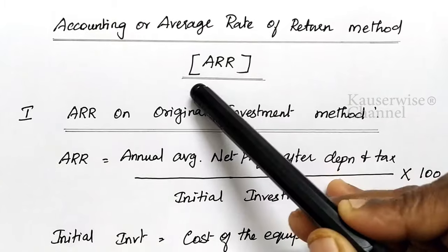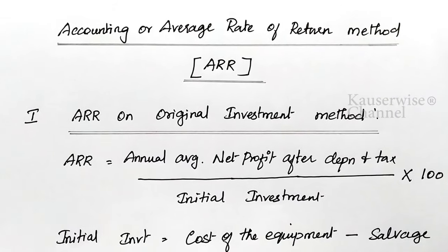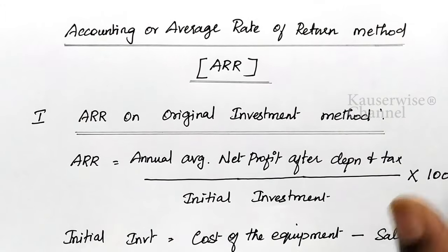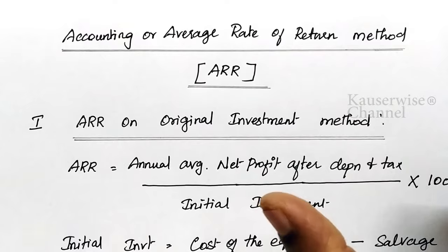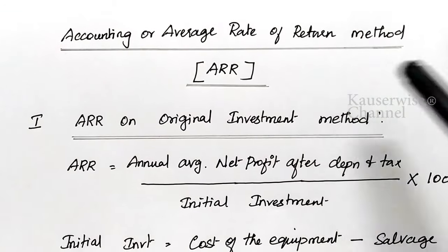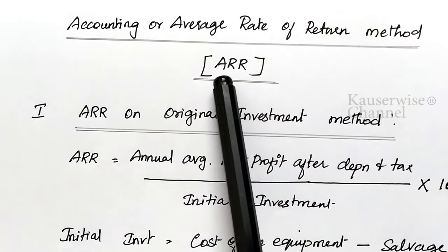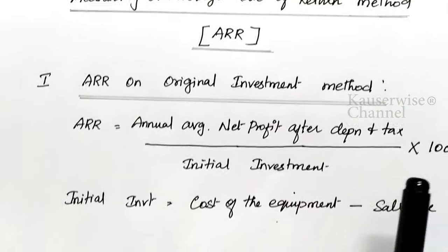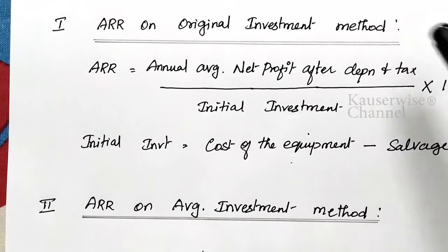ARR stands for Accounting or Average Rate of Return method. It is a tool which measures the rate of return on capital employed, and it is generally used to measure the overall profitability of the firm. It consists of profit after depreciation and tax with original investment or average capital employed. There are two alternative formulas to find out ARR: number one is ARR on original investment method, and number two is ARR on average investment method.